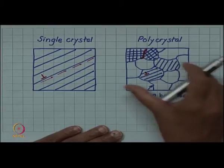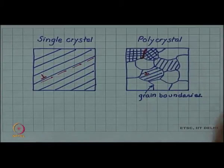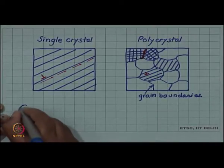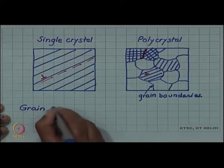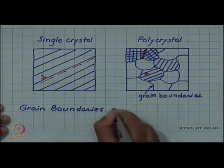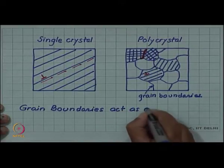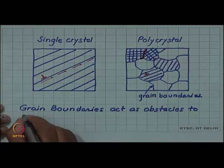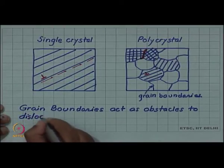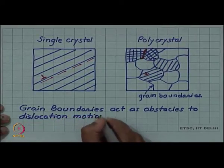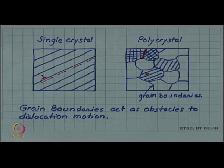So thus, the entire motion of the dislocation is obstructed by the grain boundary and it becomes more difficult to continue the deformation through the dislocation motion. So grain boundaries act as obstacles, obstacle to dislocation.